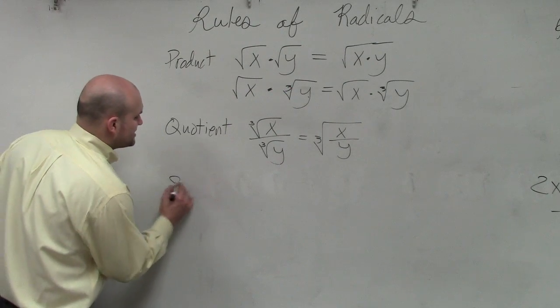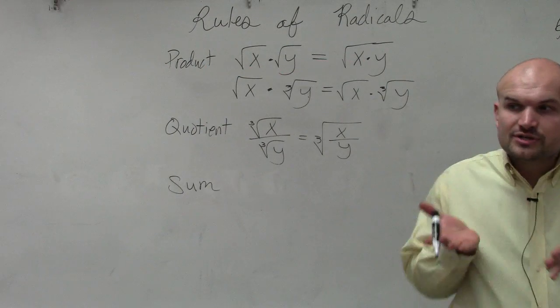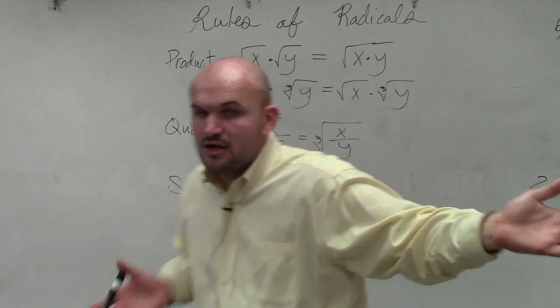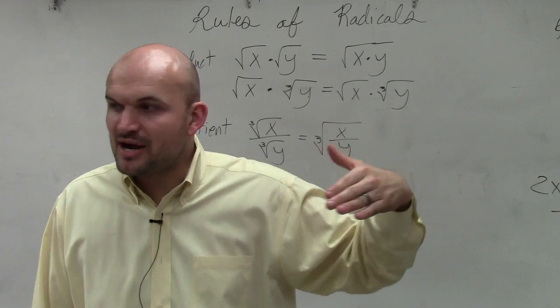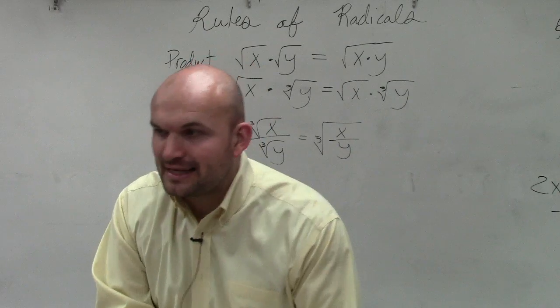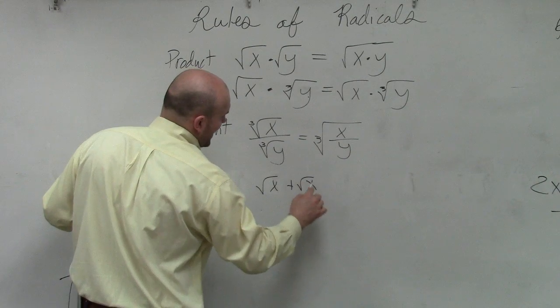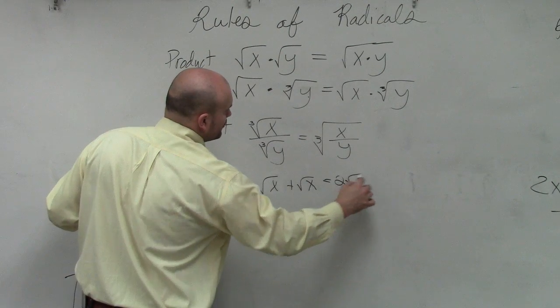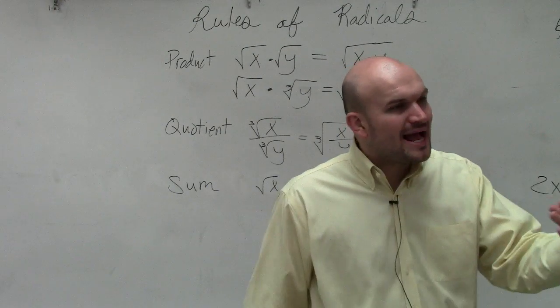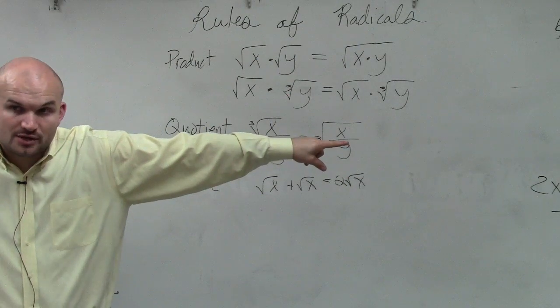Now, let's get into sum where a lot of students make their mistakes. When we're dealing with sum, just like with the exponents, when you are combining radical expressions, you have to have the exact same root and you have to have the exact same radicand. So therefore, I can only add the square root of x plus the square root of x is equal to 2 square root of x. So the root and the radicand have to exactly be the same, just like with exponents.